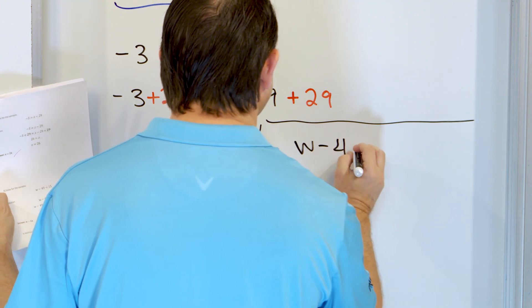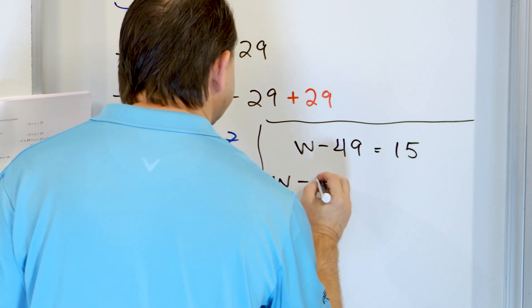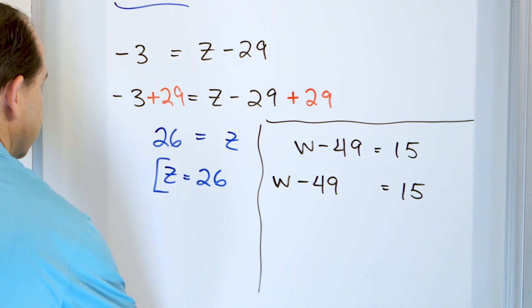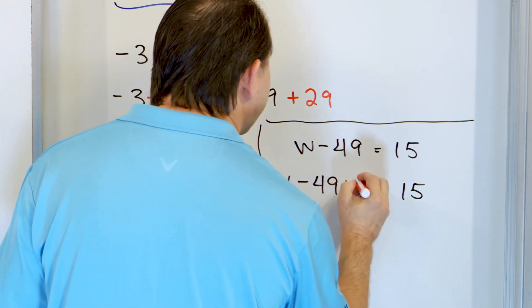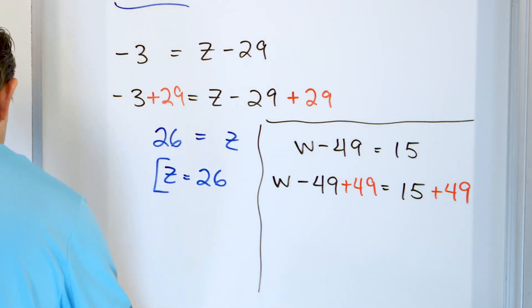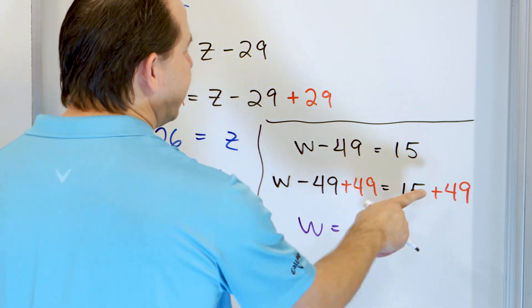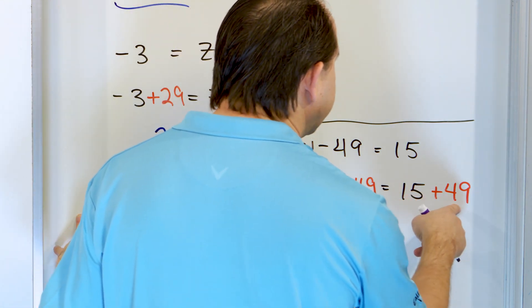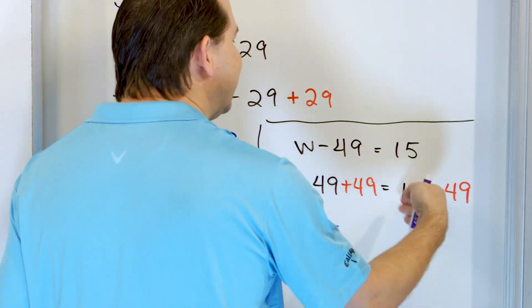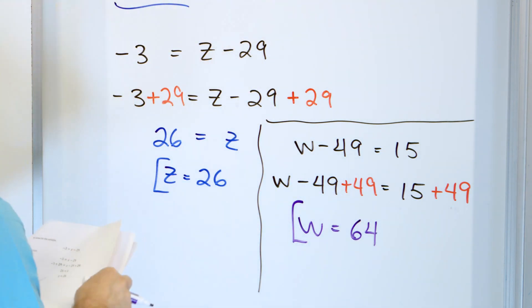Problem 9: w minus 49 equals 15. We're subtracting 49, so we add 49 to both sides. On the left-hand side, negative 49 plus positive 49 is zero, leaving just w. Here we have 49 plus 15 — if you think of it as 50 plus 15 it would be 65, but it's one less than that, so it has to be 64. So w equals positive 64.